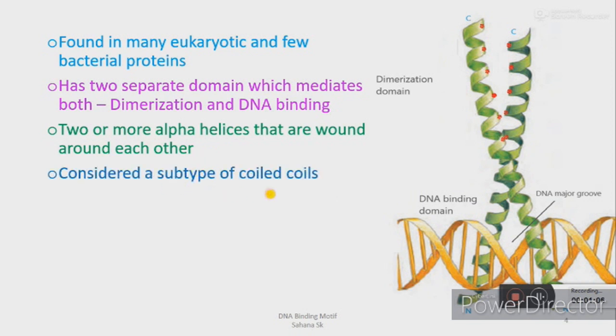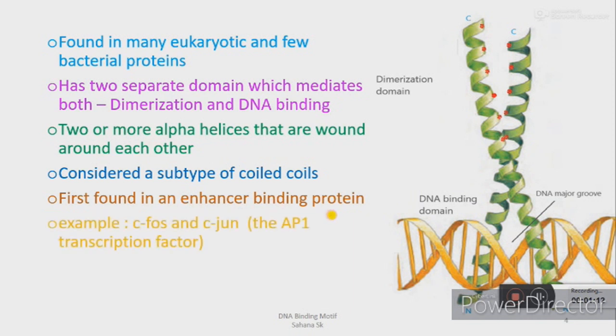This type of motif was first found in enhancer binding proteins, for example c-Fos and c-Jun, which are leucine zipper proteins and are AP-1 transcription factors. Leucine zipper motif is also known as leucine scissors.